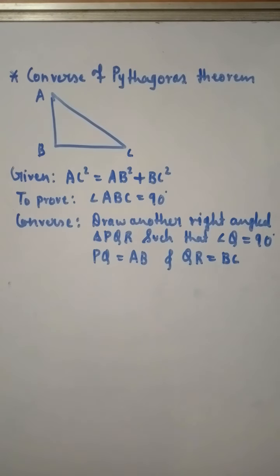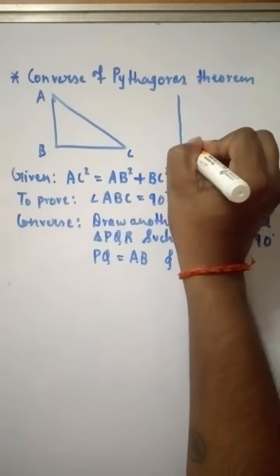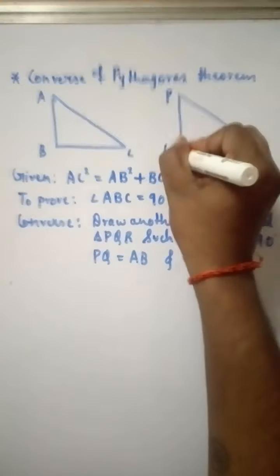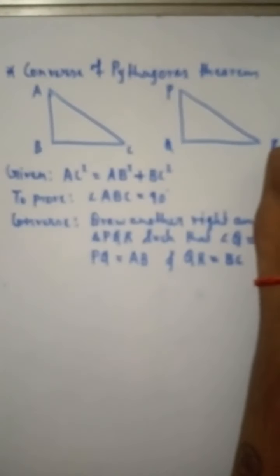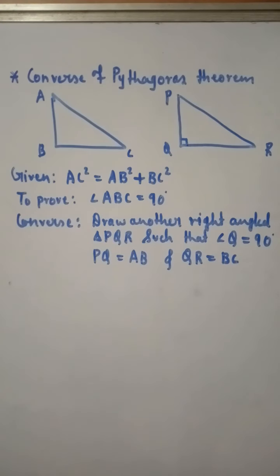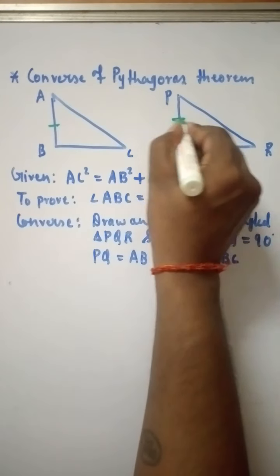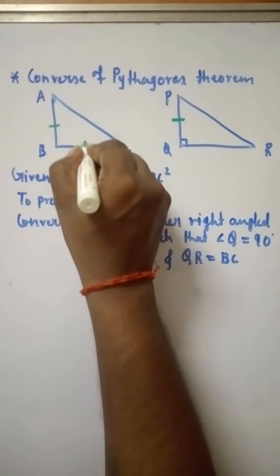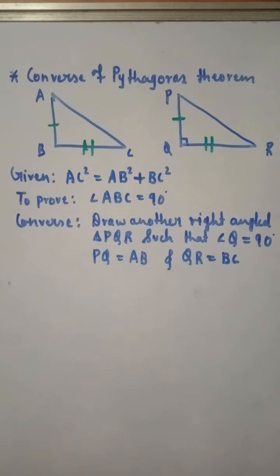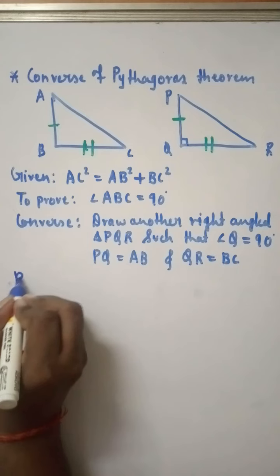So we construct another triangle PQR where angle Q is 90 degrees, and we have taken AB = PQ and BC = QR. Now let's start with the actual proof.